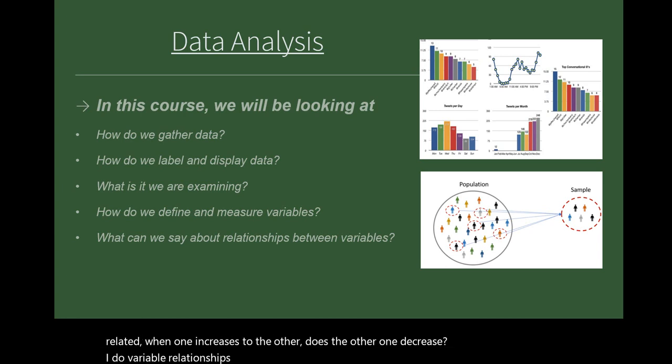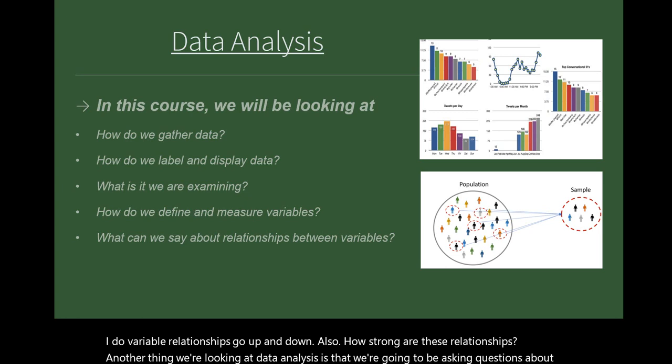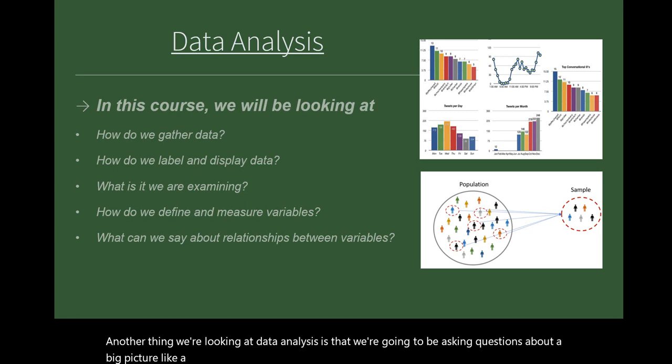Do variable relationships go up and down also? How strong are these relationships? Another thing we're looking at in data analysis is that we're going to be asking questions about a big picture like a population, but we're only going to get a little bit of that picture which is called the sample.